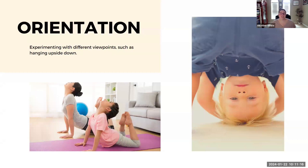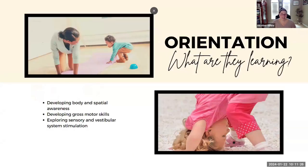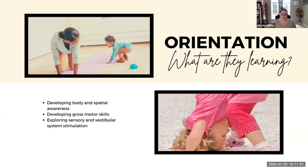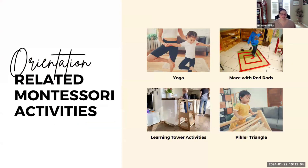The next schema is the orientation schema — this is the child who has an interest in experimenting with different viewpoints, like hanging upside down or looking upside down through their legs. In this schema, a young child is developing their body awareness, spatial awareness, and gross motor skills, and they're also exploring stimulation through their sensory and vestibular systems.